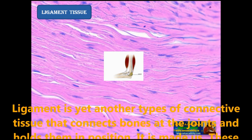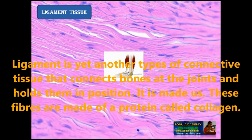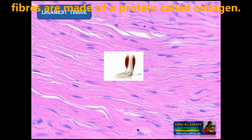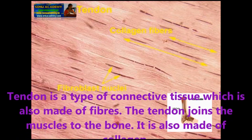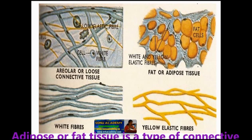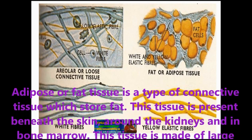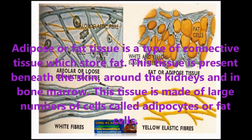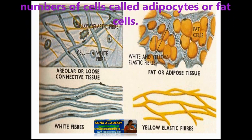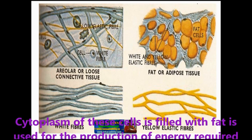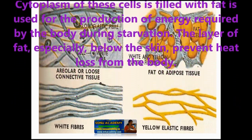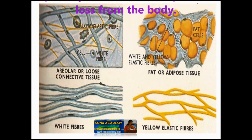Ligament is a type of connective tissue that connects bones at the joints and holds them in position. It is made up of a large number of fibers composed of a protein called collagen. Tendon is a type of connective tissue which joins the muscles to the bone and is also made up of collagen. Adipose or fat tissue is a type of connective tissue which stores fat. It is present beneath the skin, around the kidneys and in bone marrow, and is made up of cells called adipocytes. The fat is used for energy production during starvation, and the layer of fat beneath the skin prevents heat loss from the body.